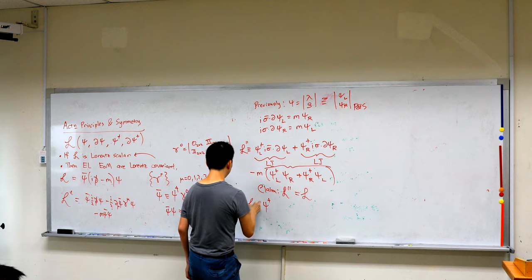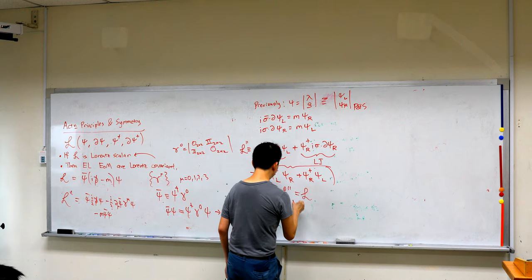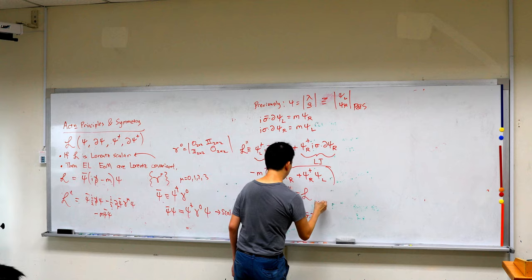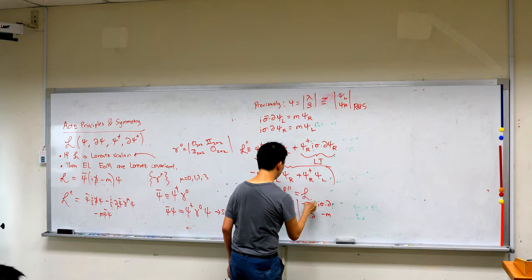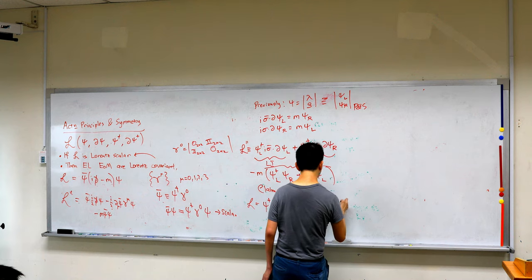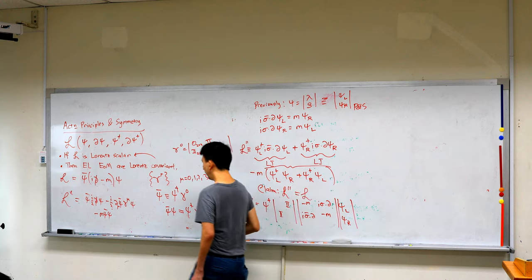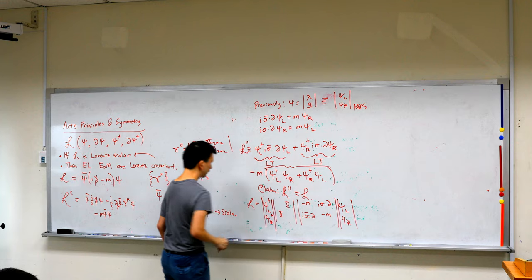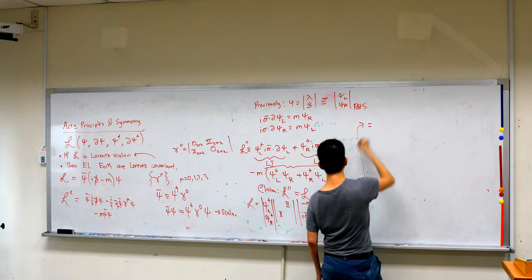Let's show this explicitly. L = psi-bar (i partial-slash minus m) psi, where psi-bar = psi-dagger gamma^0, gamma^0 is block (0,1;1,0), partial-slash is i sigma-bar dot partial on top and i sigma dot partial on the bottom, and minus m is minus m times the identity. Acting on psi = (psi_L, psi_R)^T, we multiply out the matrices.